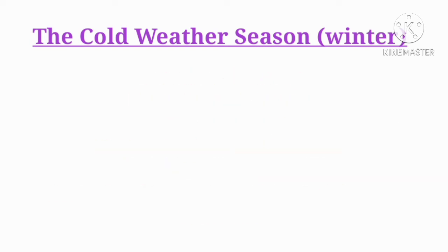Today we studied about the cold weather season. It starts from November and ends in February. The coldest months of India are December and January. Tamil Nadu receives rainfall during this season. Due to western cyclonic disturbances, north and northwest India also experience rainfall. The total amount of winter rainfall is called Mahavad, which is suitable for rabi crops. The peninsula region does not have a well-defined cold season because of the moderating influence of the sea.